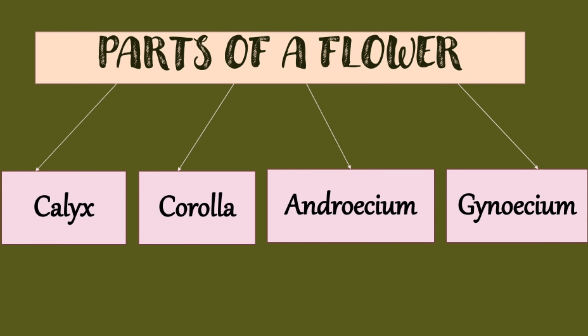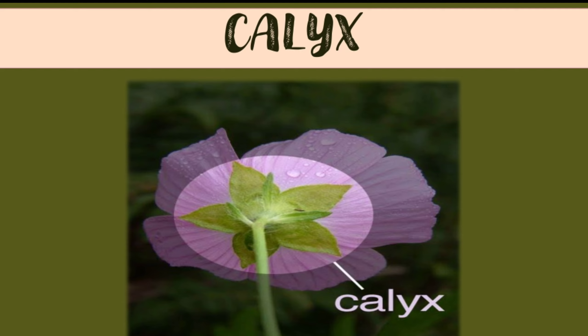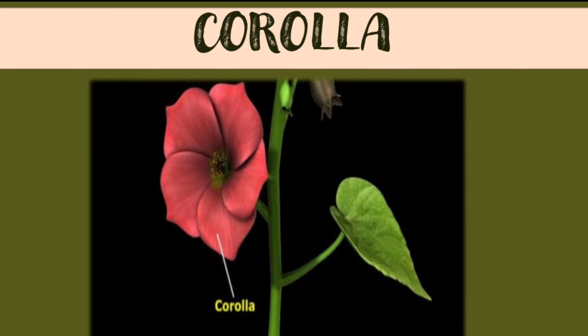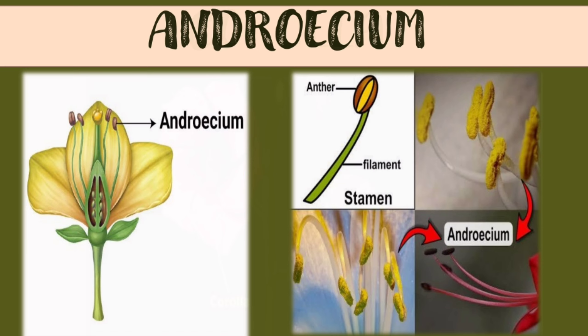There are four main parts of a flower: calyx, corolla, androecium, and gynoecium. The calyx is made up of leaf-like sepals that cover the petals in the bud condition. The corolla is made up of colorful petals. The androecium is the male reproductive part, consisting of stamens — each stamen is made up of an anther and a filament.